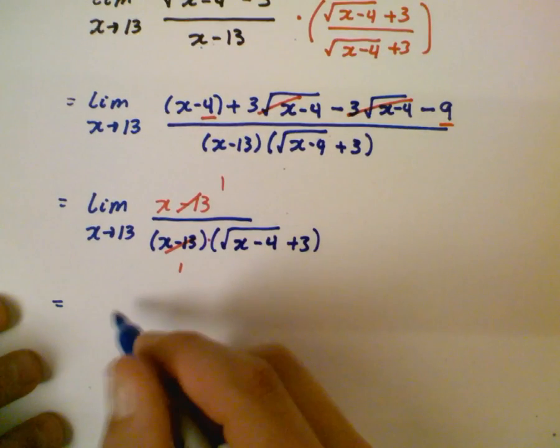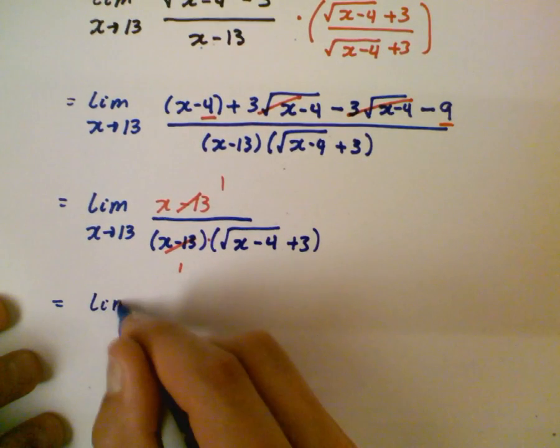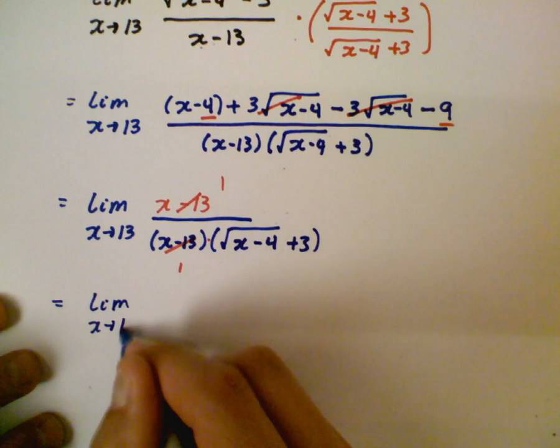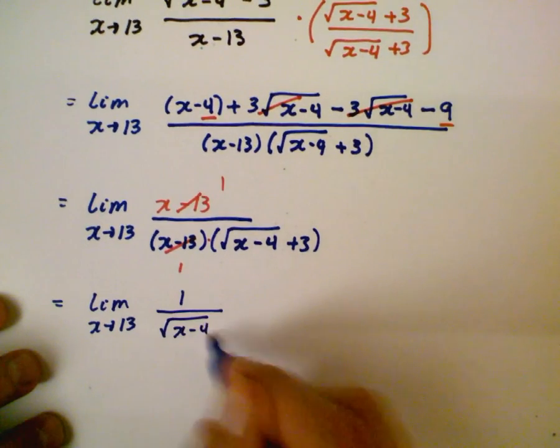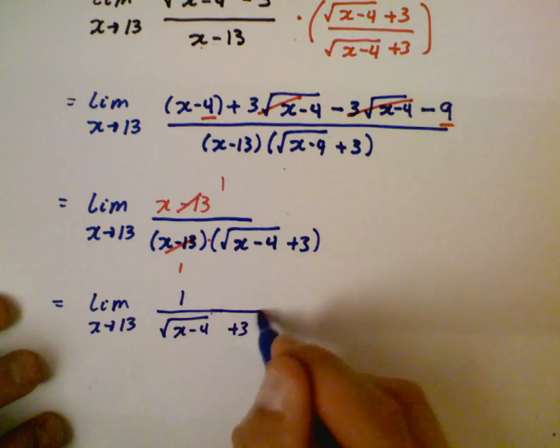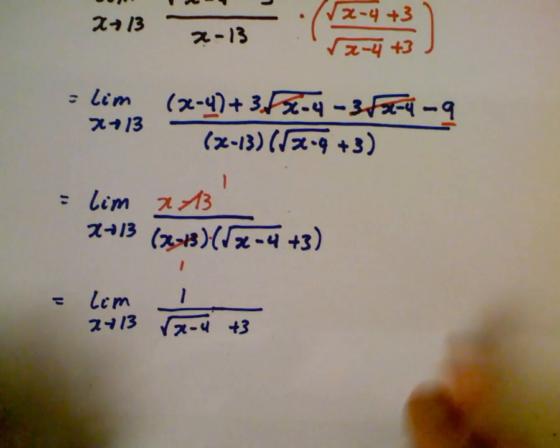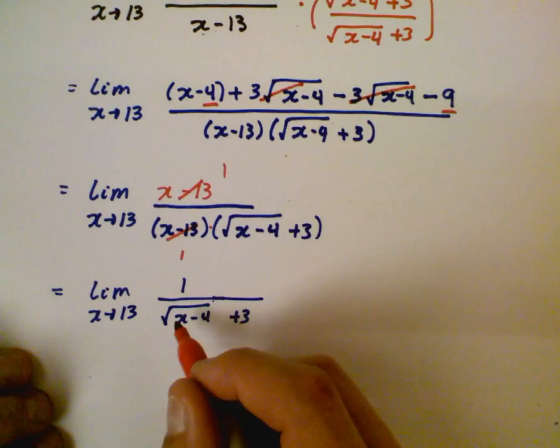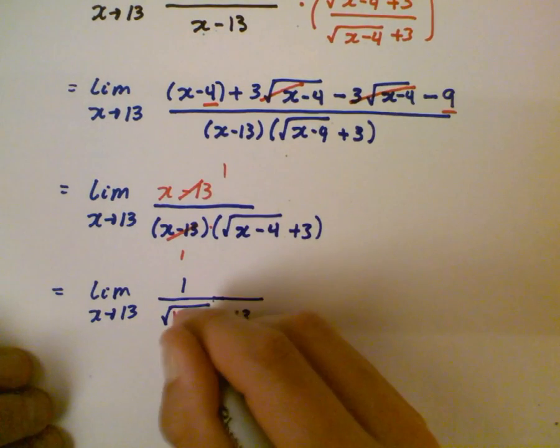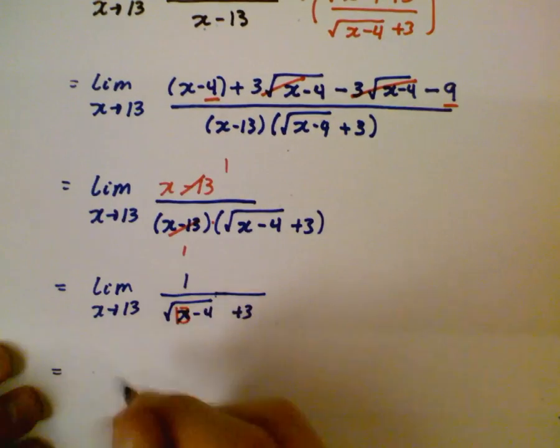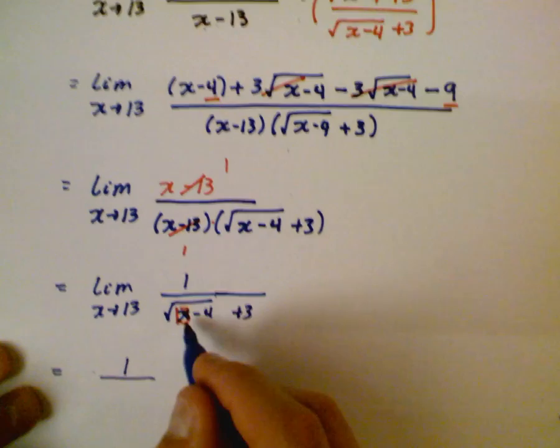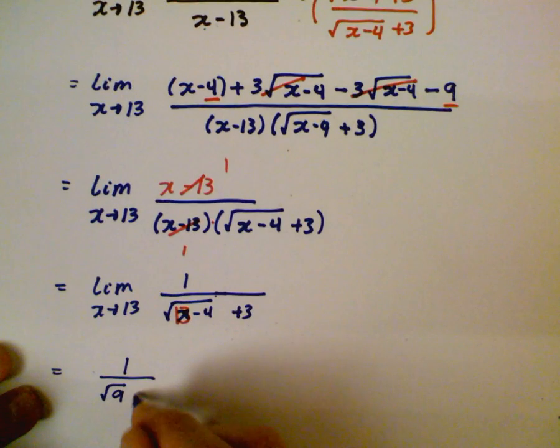So we're going to now have the limit as x approaches 13 of 1 over the square root of x minus 4 plus 3 on the denominator. And now it's a matter of substitution. What you're doing now is you've eliminated the problem and this x is replaced with that 13. That's what's going to happen with the direct substitution.